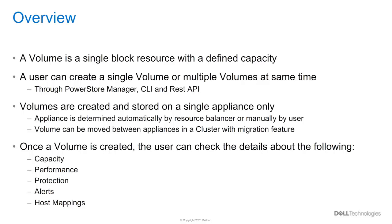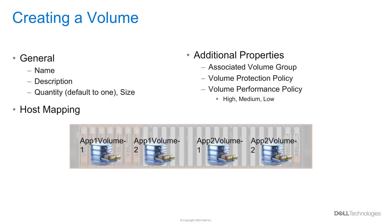Volumes can be moved between appliances in a cluster after creation using the Migrate feature. Once the volume is created, it has different properties associated with it, such as capacity, performance, protection, alerts, and host mappings. To create a volume, the administrator has to provide a name and the size. Additional properties can also be set, such as associated volume group, volume protection policy, and volume performance policy, which defaults to medium.